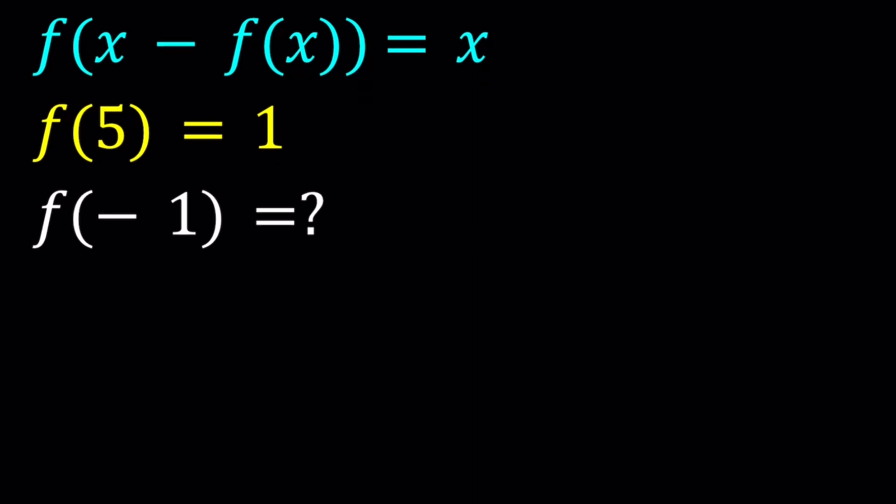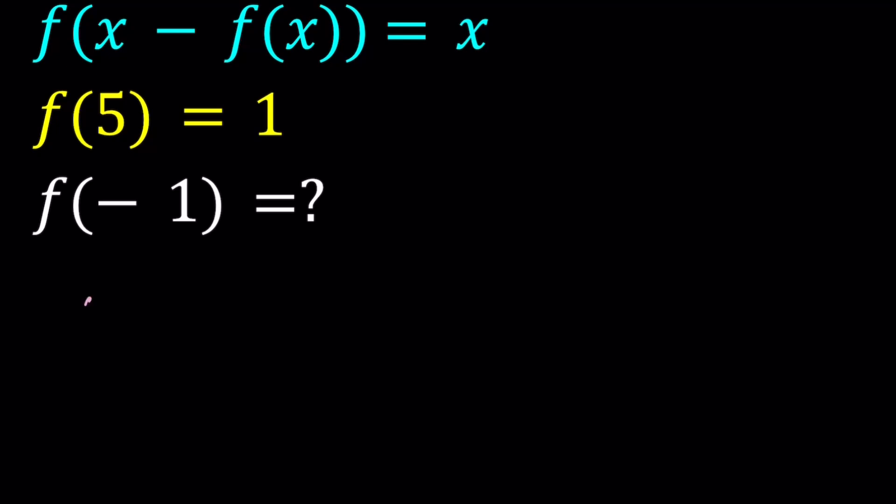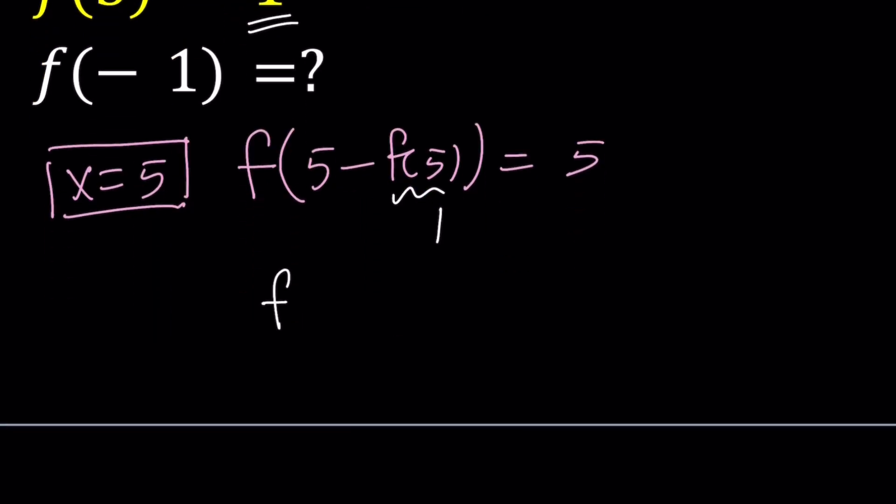So since f of 5 is given let's go ahead and start by replacing x with 5. And by the way this is going to be a quick video. So this gives us f of 5 minus f of 5 equals 5. Now we're given that f of 5 is equal to 1. So we can go ahead and replace f of 5 with 1. That gives us f of 5 minus 1 which is f of 4 equals 5. Great.